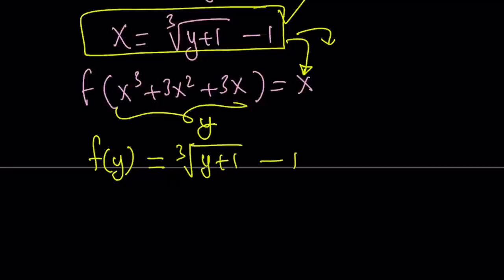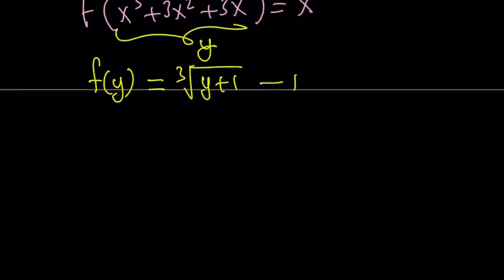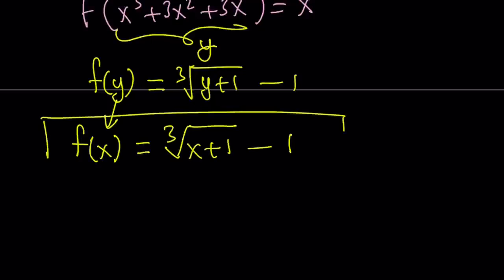But if you wanted to write it using an x and don't forget about all the other x's. It's not the same. But because these are dummy variables we can basically replace any variable with anything we want. F of x can be written as the cube root of x plus 1 minus 1. And then that actually gives us the answer in terms of x.